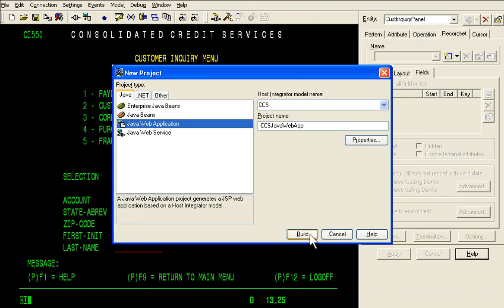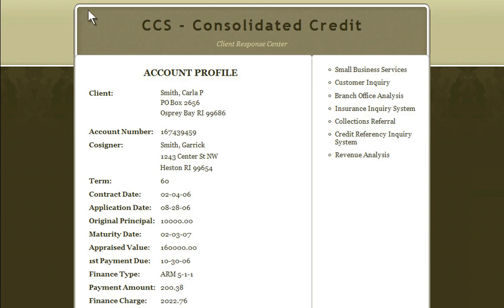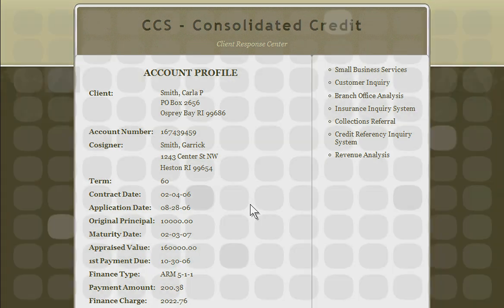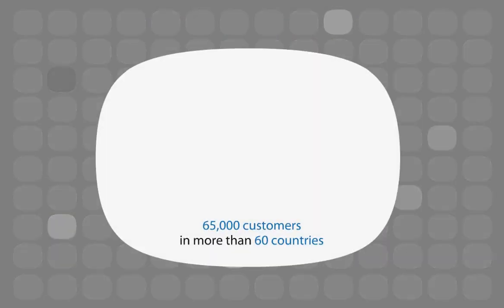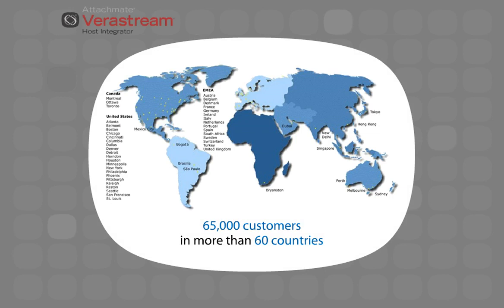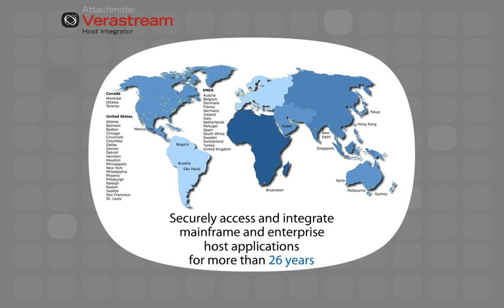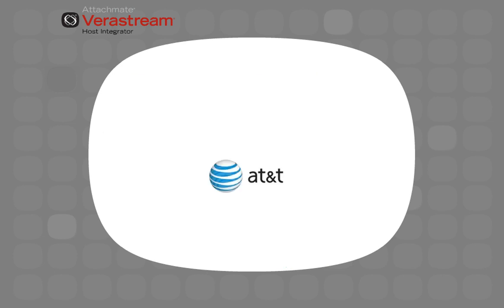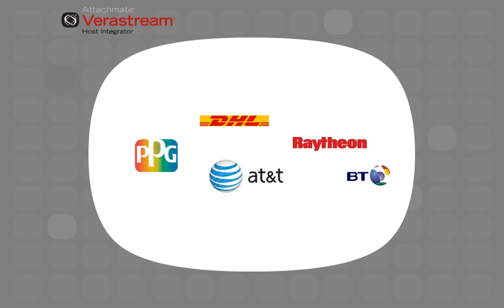The result is a readily accessible web application that offers all the features and functionality of the host application. With 65,000 customers in more than 60 countries, AttachMate has been helping companies securely access and integrate mainframe and enterprise host applications for more than 26 years. Today, companies like AT&T, British Telecom, Raytheon, DHL, and PPG Industries are using VeriStream Host Integrator to successfully address a range of business needs.